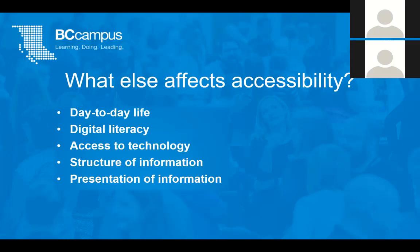With multiple formats comes new challenges. Accessibility looks different in a print textbook than it does in a web book, an e-book, or a PDF. If you are providing all of these formats, you have to ensure that students using each format can access the same information. For example, people using a print version will need the web addresses if they're going to access any external resources linked in your book. The final thing to highlight is the structure of information — paying attention to the number of chapters, titles, use of sections and subsections, numbering systems, and headings. The more intentional you are in thinking about structure, organization, and navigation, the more useful and accessible your resource will be.